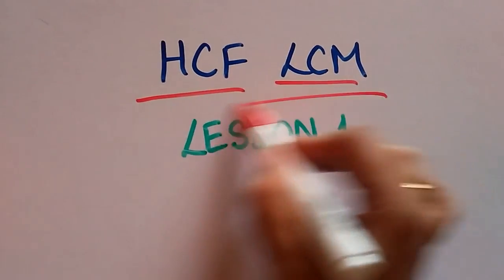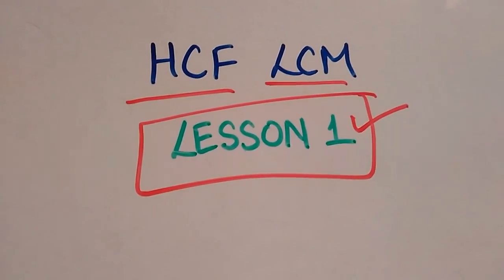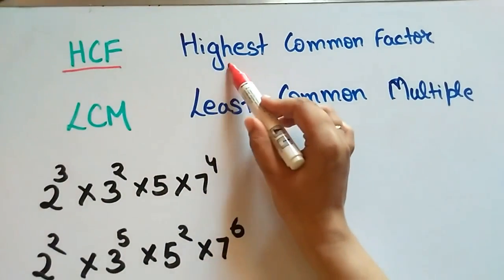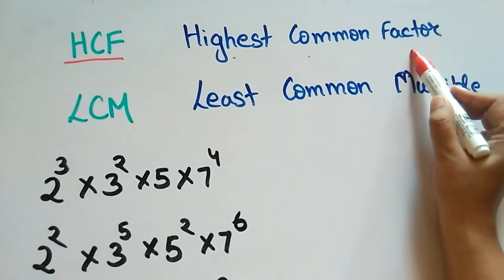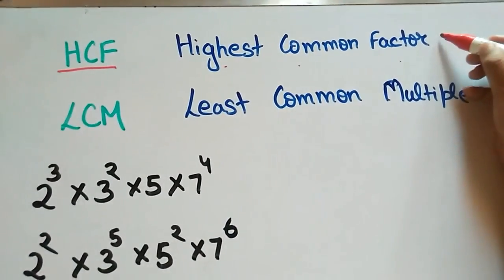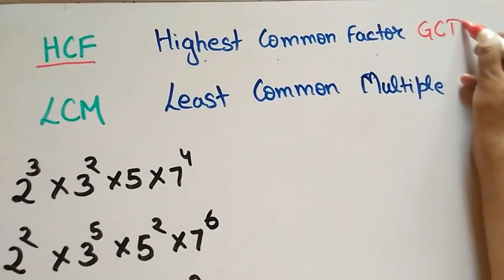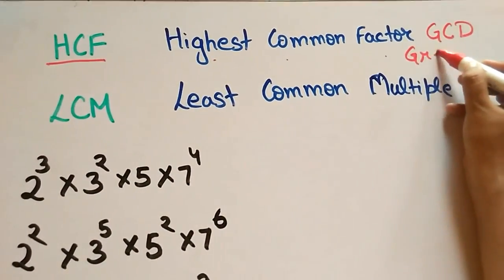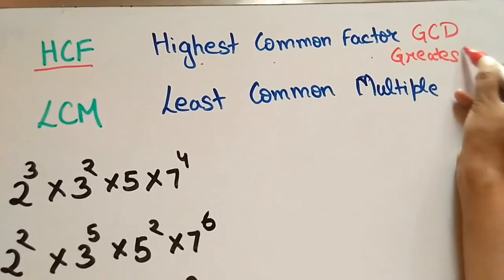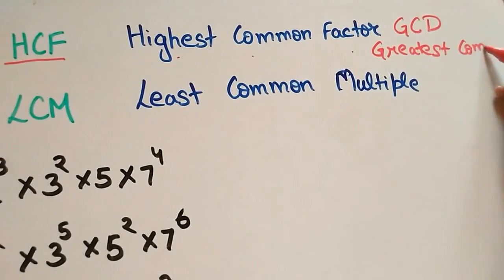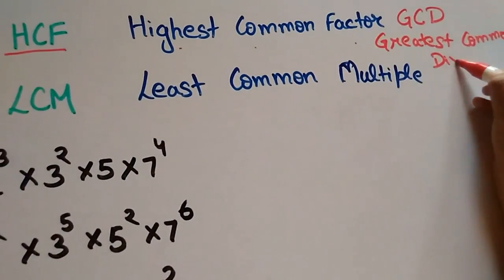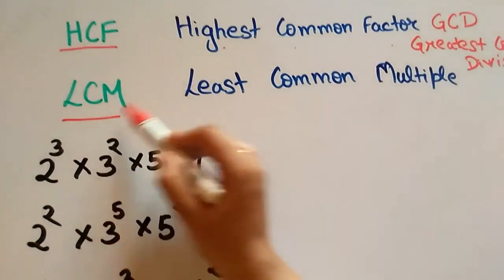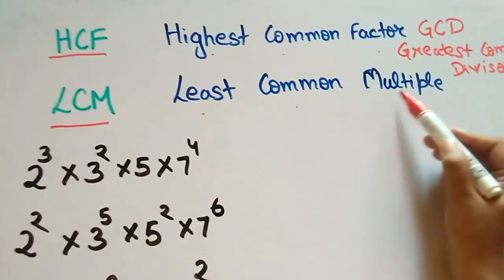HCF-LCM lesson 1. HCF is highest common factor. This is sometimes also called as GCD, greatest common divisor. LCM is least common multiple.